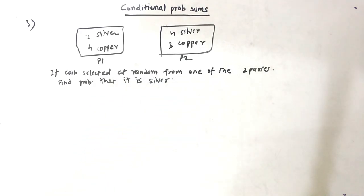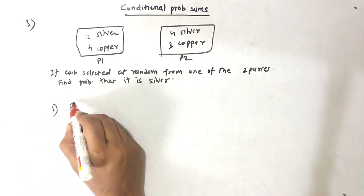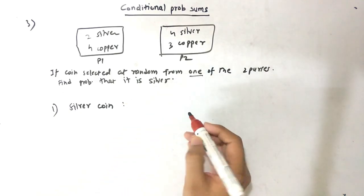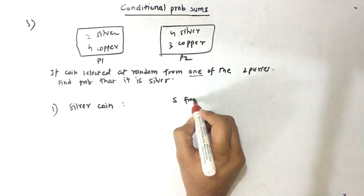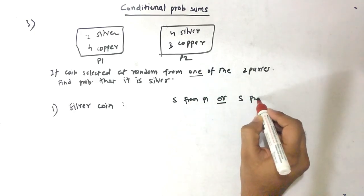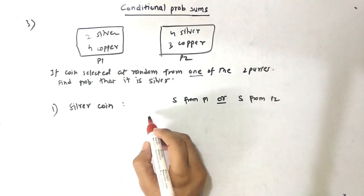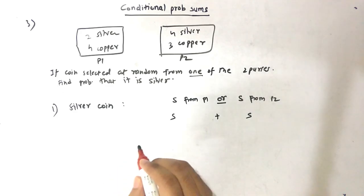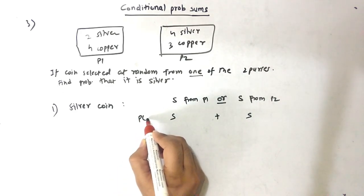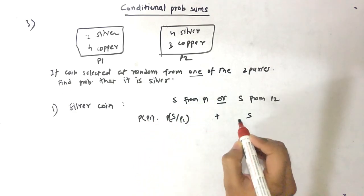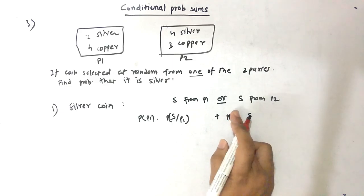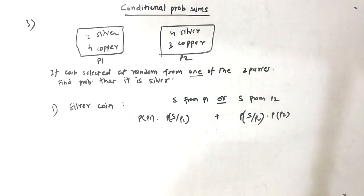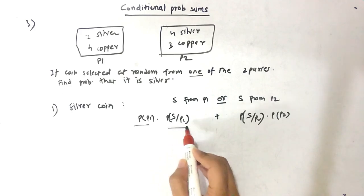The logic is: we need a silver coin, and it can come from Purse 1 or Purse 2 — 'or' means addition. The approach is: P(P1) × P(S|P1) + P(P2) × P(S|P2). We need to find four probabilities: the probability of each purse and the probability of selecting a silver coin from each purse.